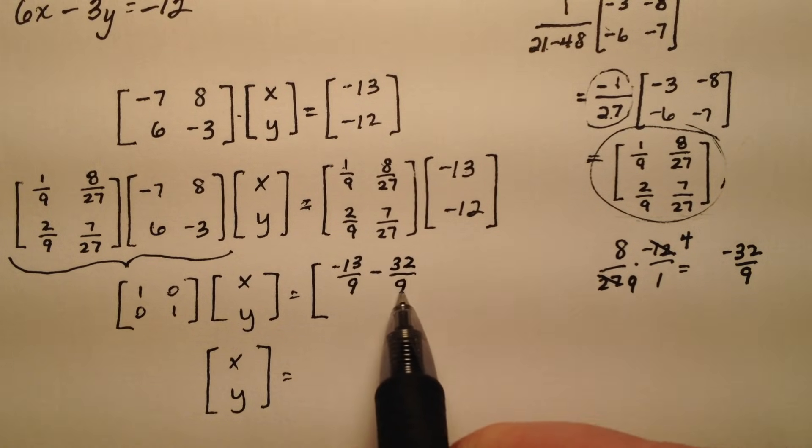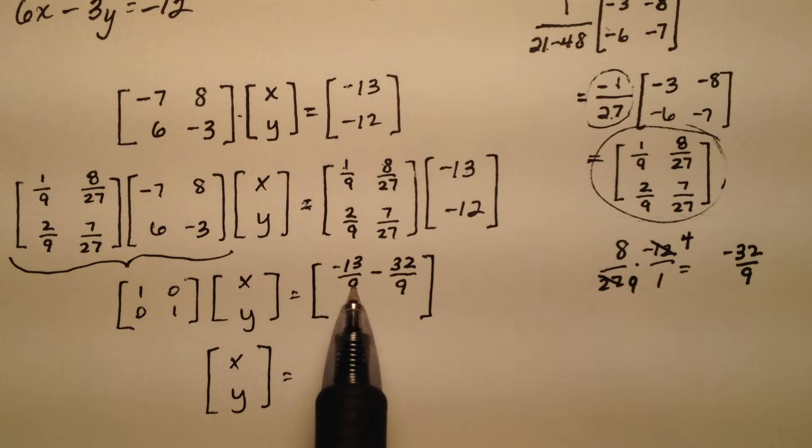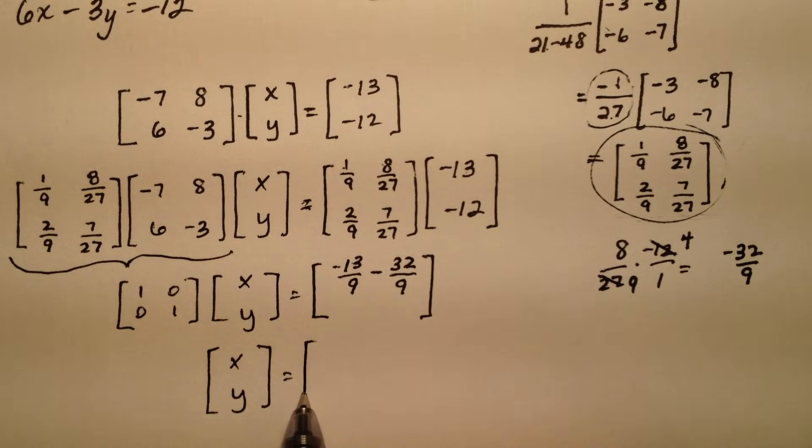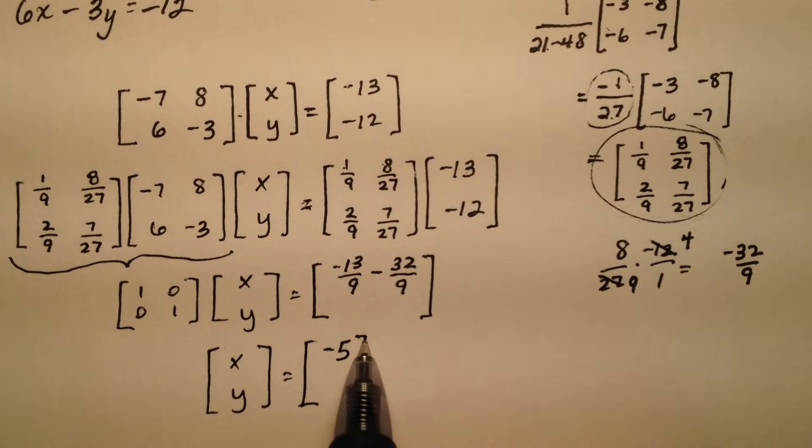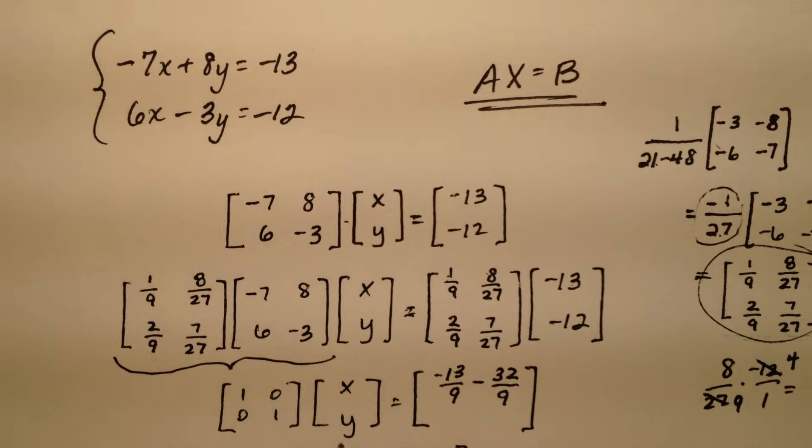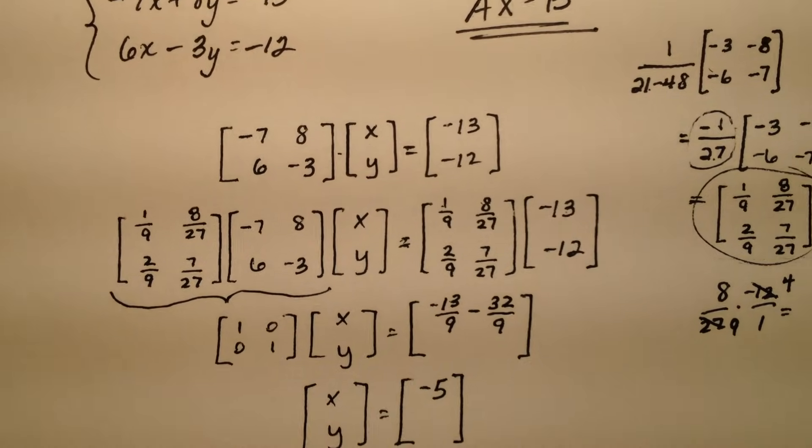Negative 13 minus 32 becomes negative 45 9ths, which is negative 5. So my x value in this original system is going to be negative 5.